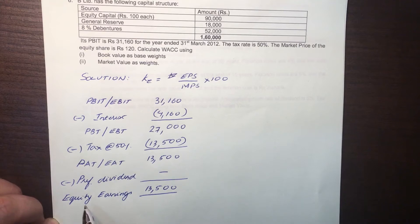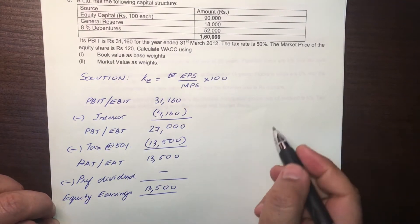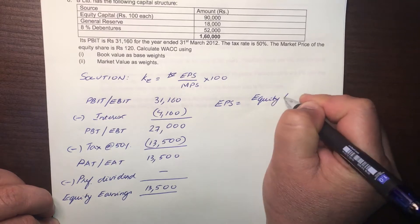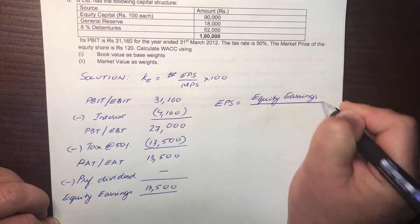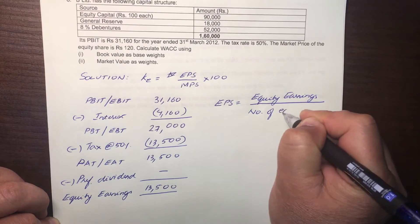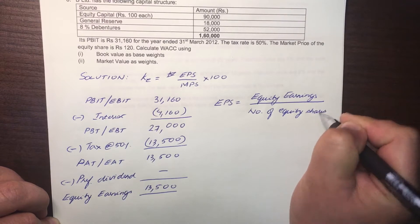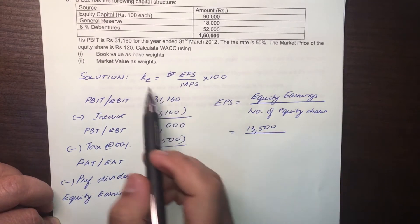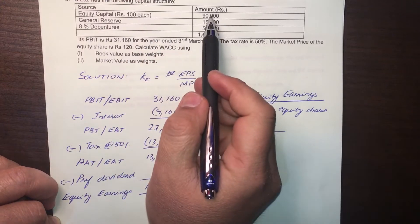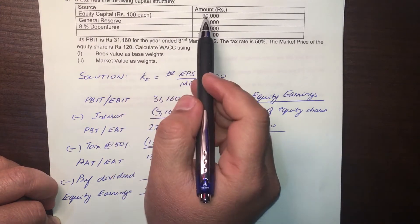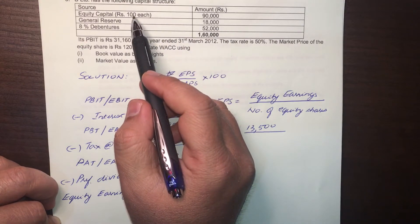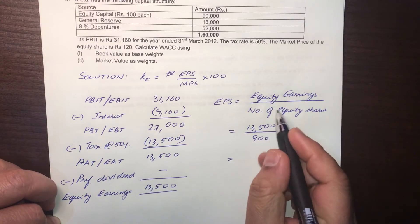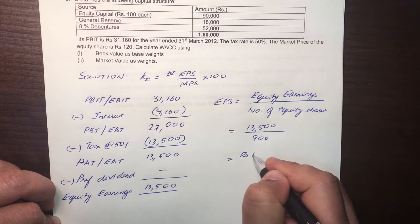Equity earnings — that is, profit available to equity shareholders — is 13,500. Now let's find out EPS. EPS is equity earnings divided by the number of equity shares. Equity capital is 90,000 and the face value of each share is 100, so the number of equity shares is 90,000 divided by 100, giving 900 equity shares. So EPS is Rs. 15.